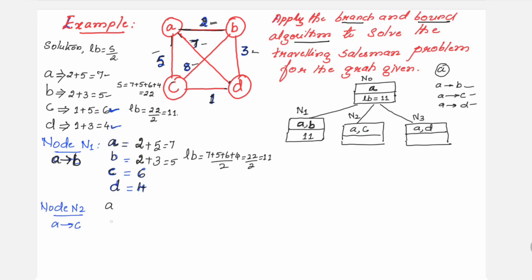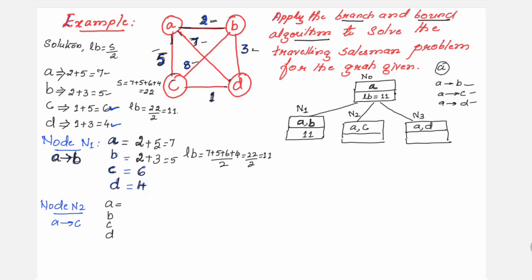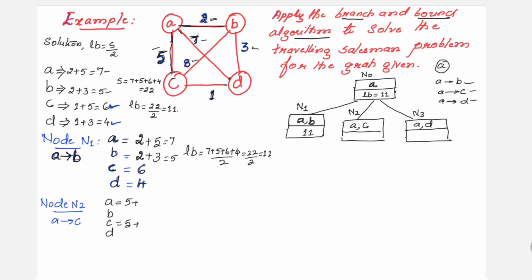For node N2 (A to C): A-C = 5 is finalized, so C-A = 5 also. For A, remaining edges are 2 and 7; minimum is 2. For C, remaining edges are 1 and 8; minimum is 1. B and D are unchanged: S_B = 5, S_D = 4. LB for N2 = (7 + 5 + 6 + 4) / 2 = 22 / 2 = 11.